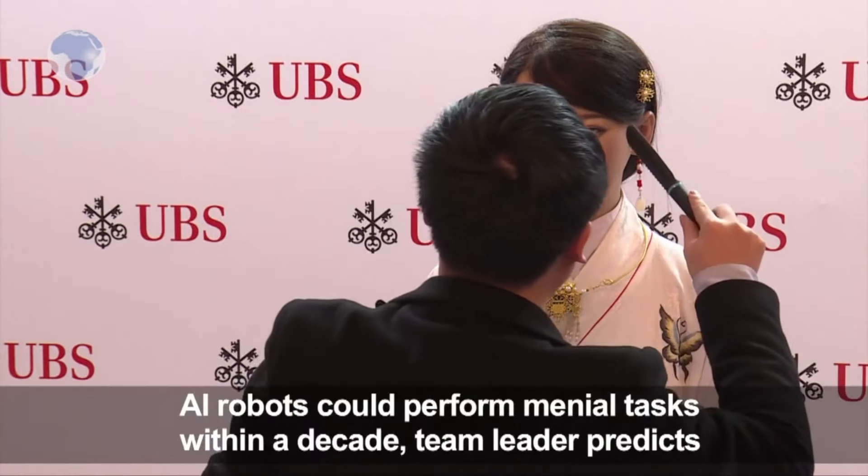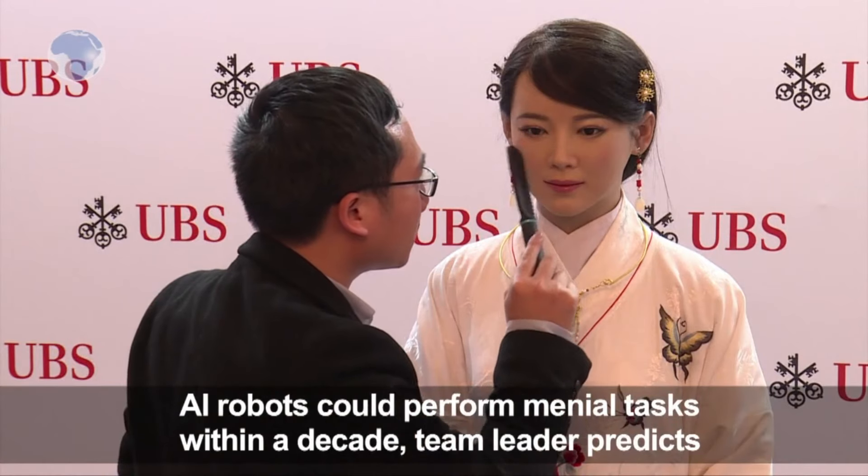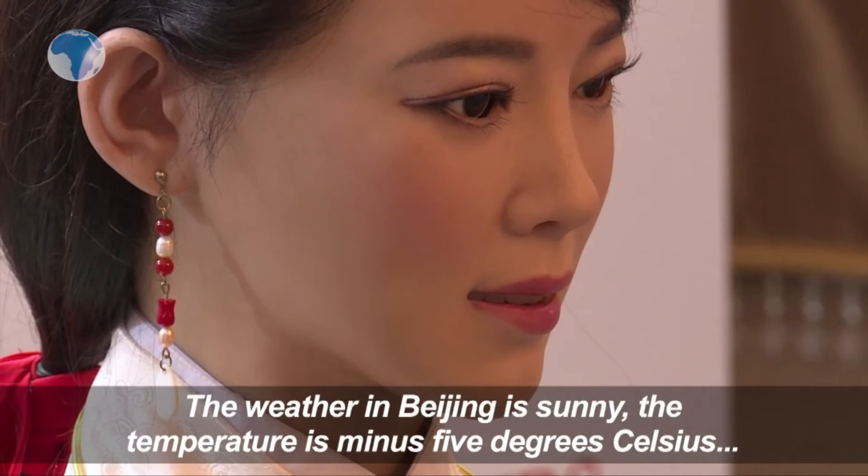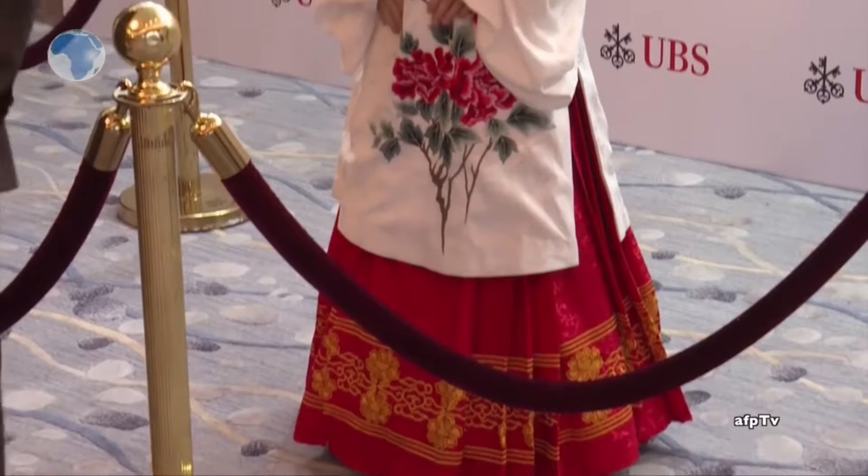Designed with features meticulously sculpted to resemble traditional Chinese facial structures, Gia is not merely a machine, but a reflection of cultural aesthetics. Its lifelike appearance adds a new layer of intrigue to the field of human-robot interaction.